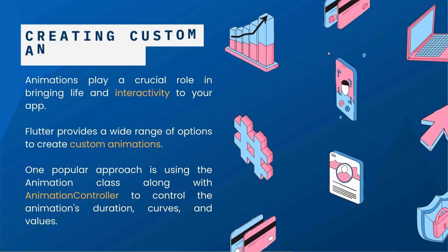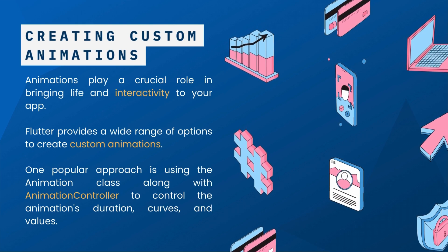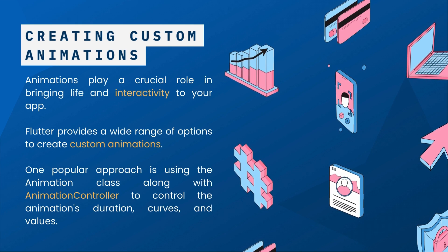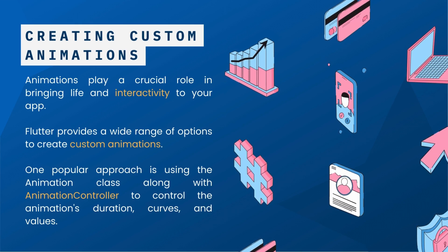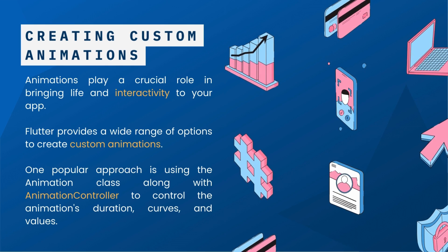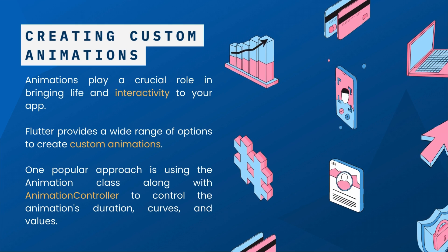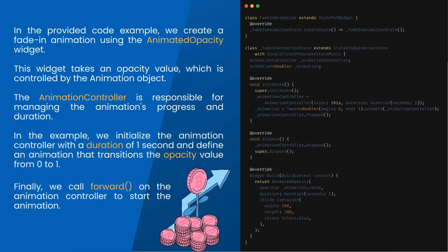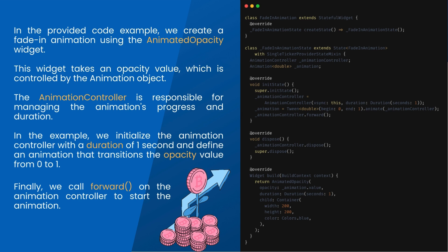Creating Custom Animations. Animations play a crucial role in bringing life and interactivity to your app. Flutter provides a wide range of options to create custom animations. One popular approach is using the animation class along with animation controller to control the animation's duration, curves, and values. In the provided code example, we create a fade-in animation using the AnimatedOpacity widget. This widget takes an opacity value, which is controlled by the animation object. The animation controller is responsible for managing the animation's progress and duration.